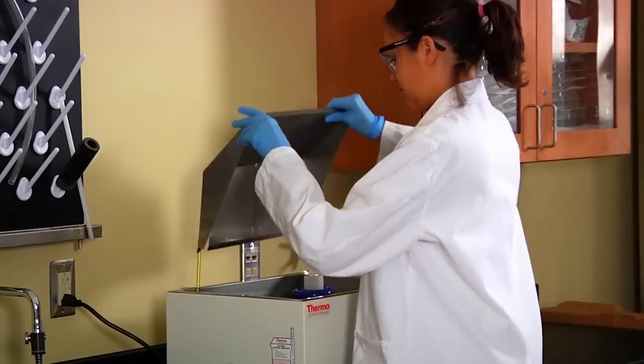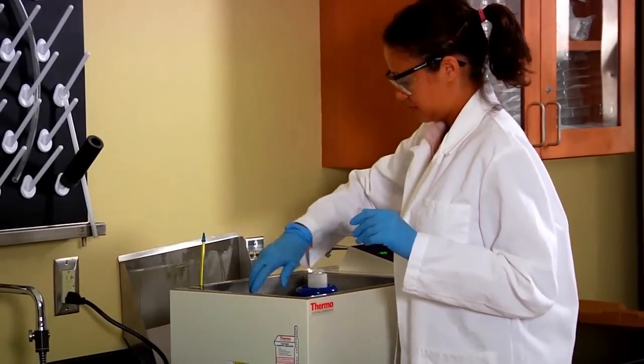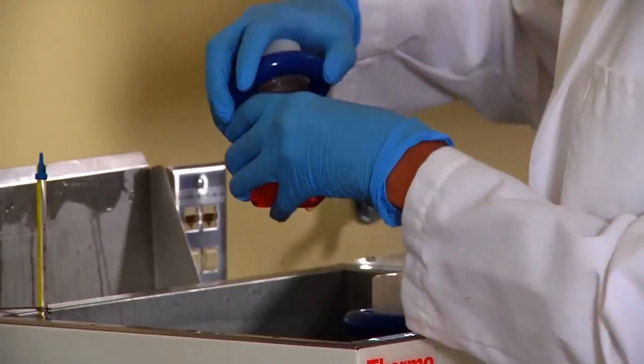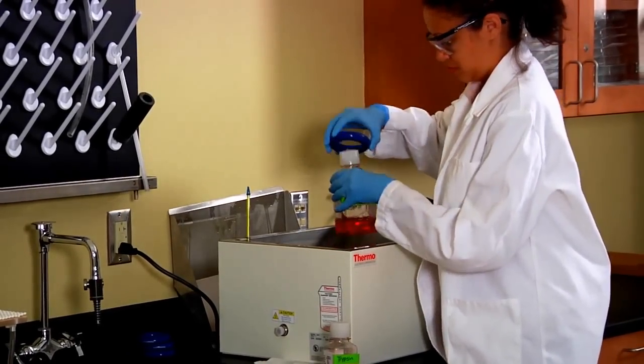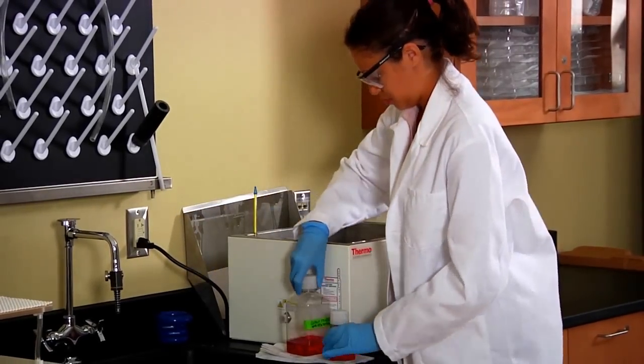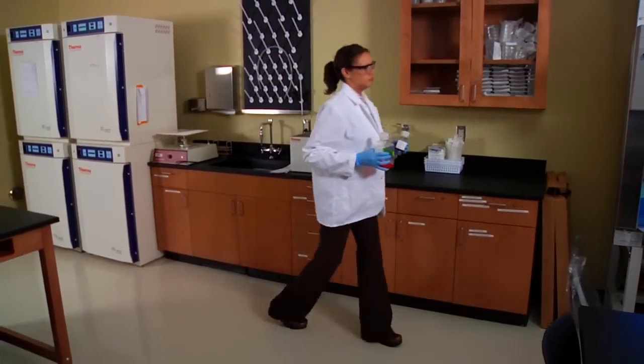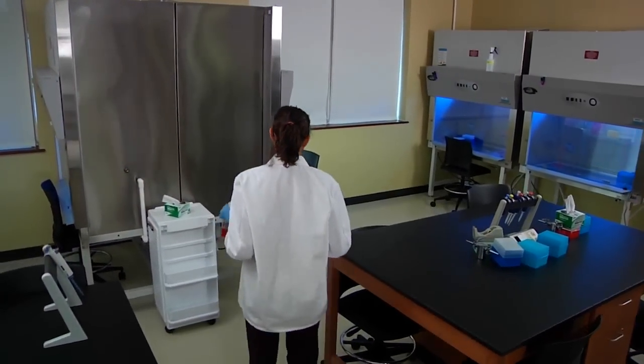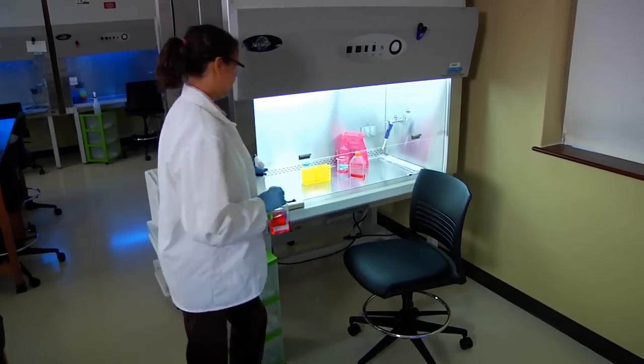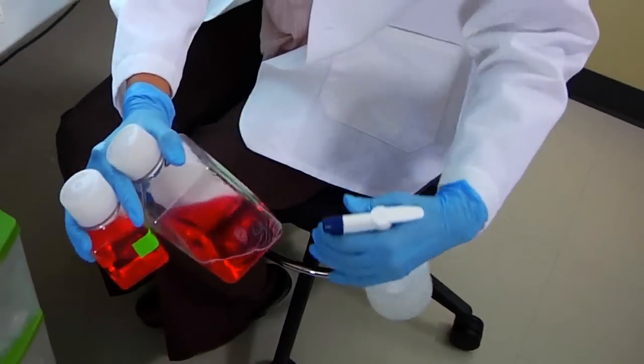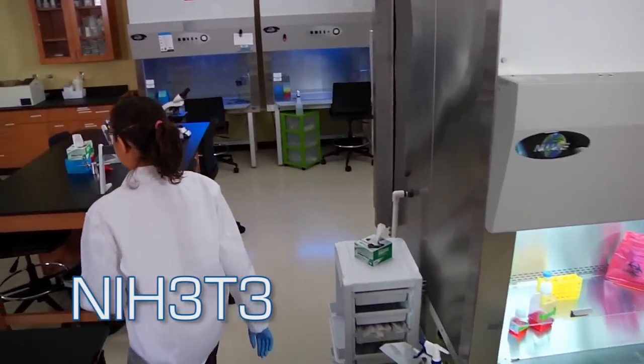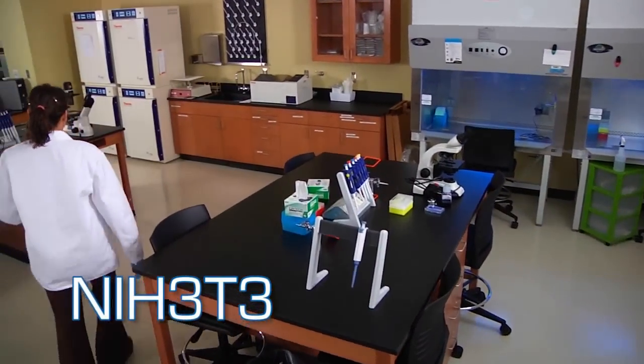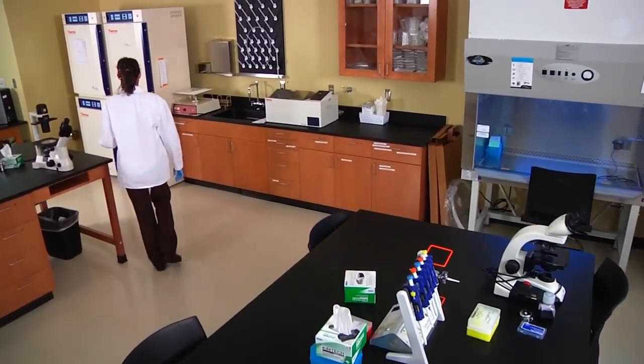In this experiment, we'll demonstrate a basic protocol for dilution cloning of an attached continuous cell line in a six-well culture plate. Dilution cloning is the technique used for creating a population of cells deriving from a single cell, resulting in a cell strain. We'll be using NIH 3T3 cells, which are commonly used in research laboratories.